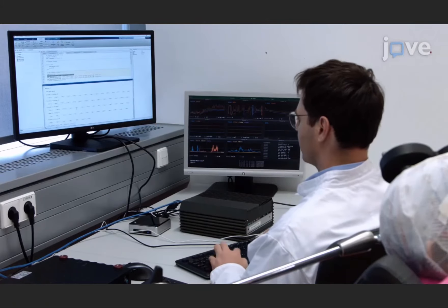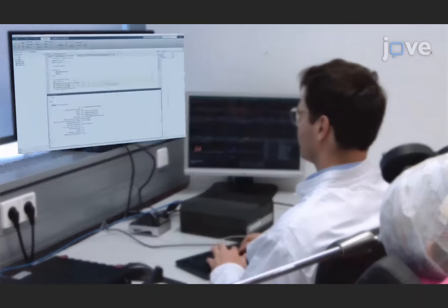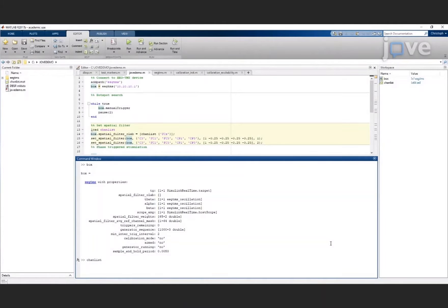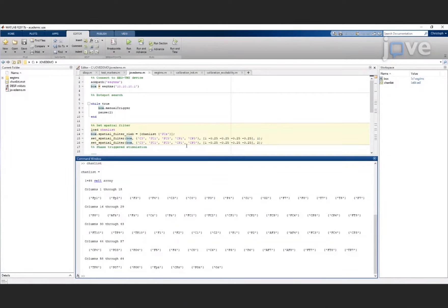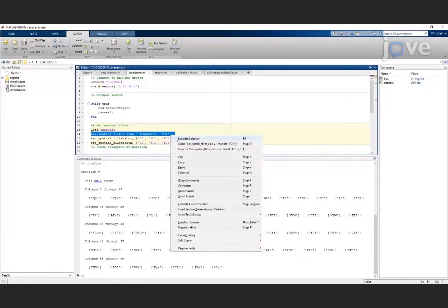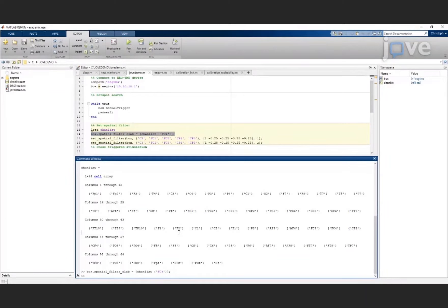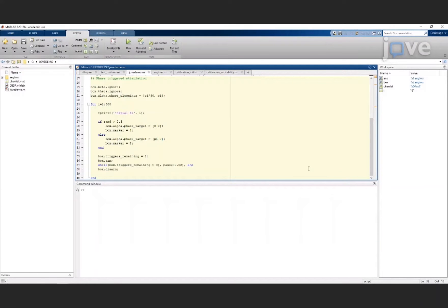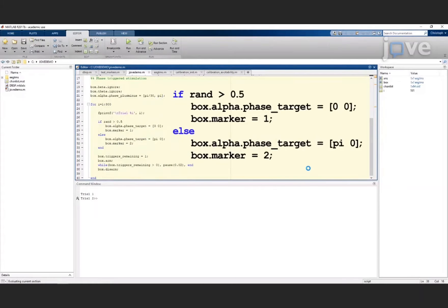To configure the real-time system to combine multiple EEG channels to extract a specific oscillation, use a 5-channel Laplacian spatial filter centered on electrode C3 to extract sensory motor rhythm. To trigger TMS at either the positive or negative peak of this oscillation, set the phase trigger condition to phase zero or phase pi randomly for each trial before arming the real-time device and setting the sequence to be repeated on a loop every 2 seconds.